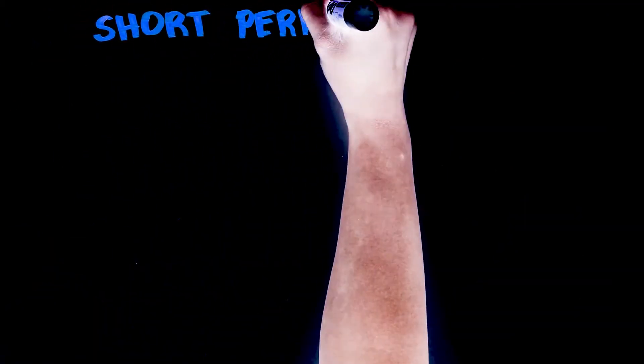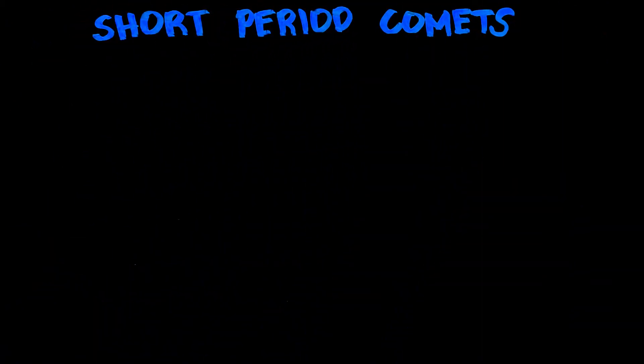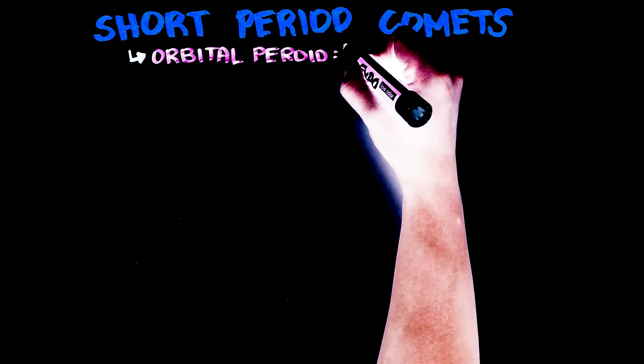Most short period comets originate from the Kuiper Belt. Short period comets are comets with an orbital period of 20 to 200 years.